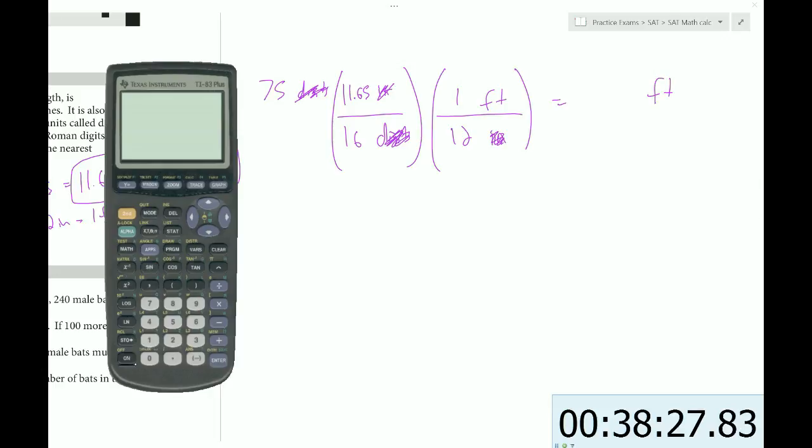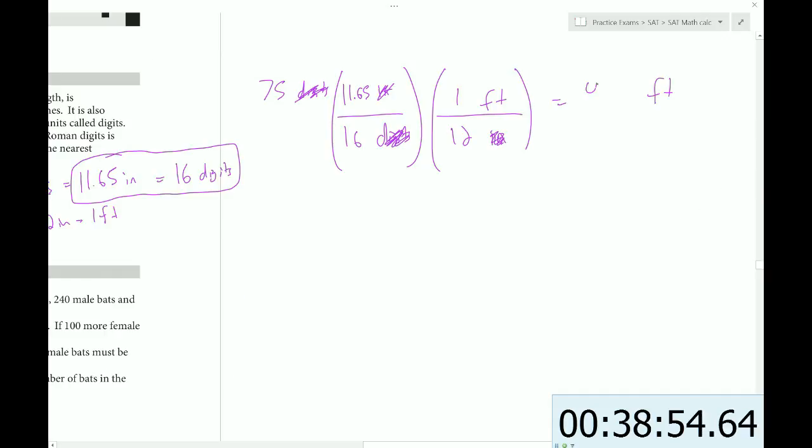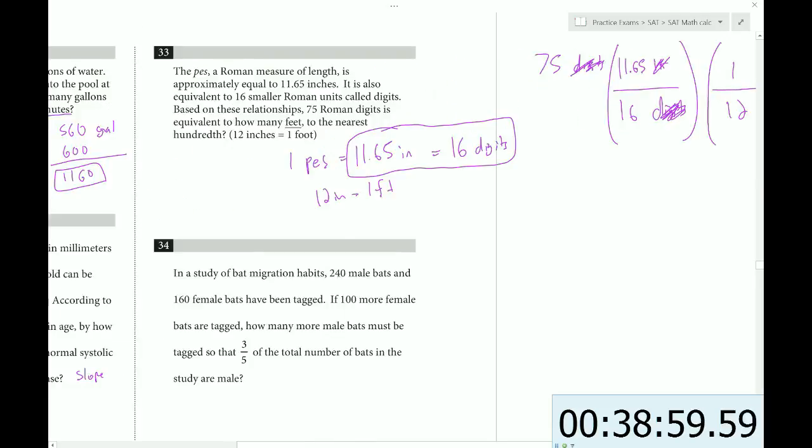So let's check the numbers. Here we have 75 times 11.65 times 1. So I'll just do the whole numerator first. And then we've got to divide by 16, and we also have to divide by 12. Notice how I do those separately. Otherwise, you might get a wrong answer. So yeah, we end up with 4.55 feet. 4.55.